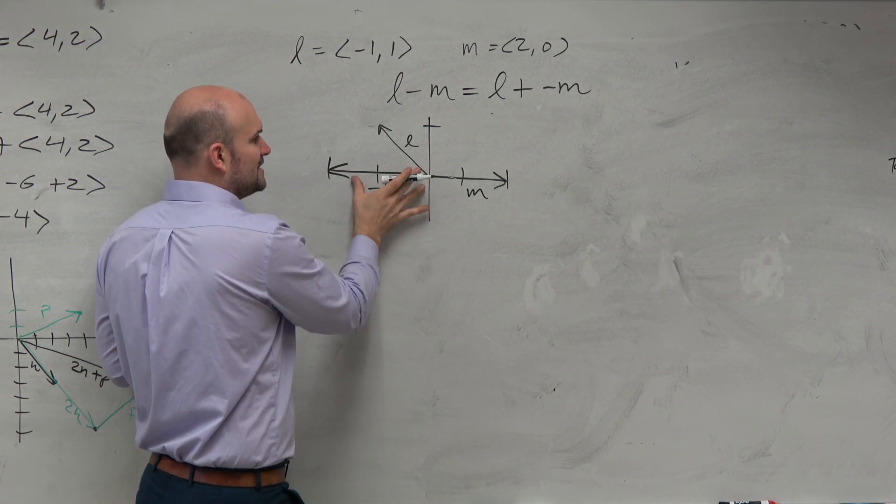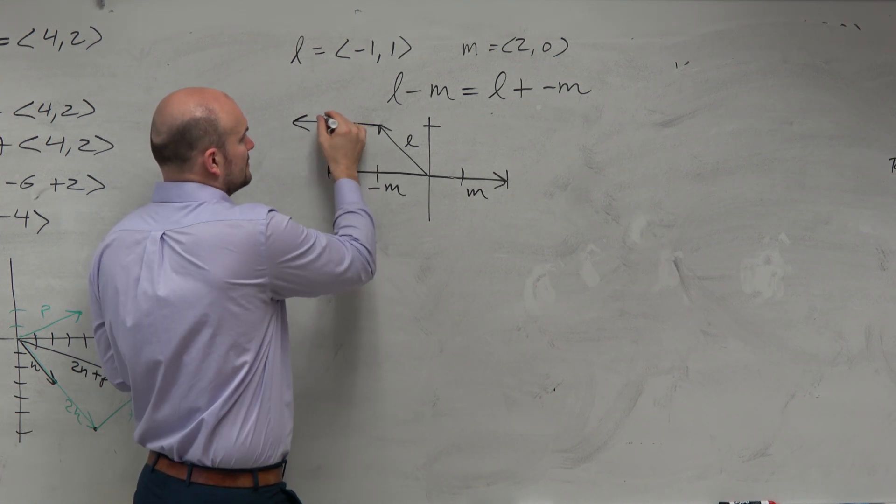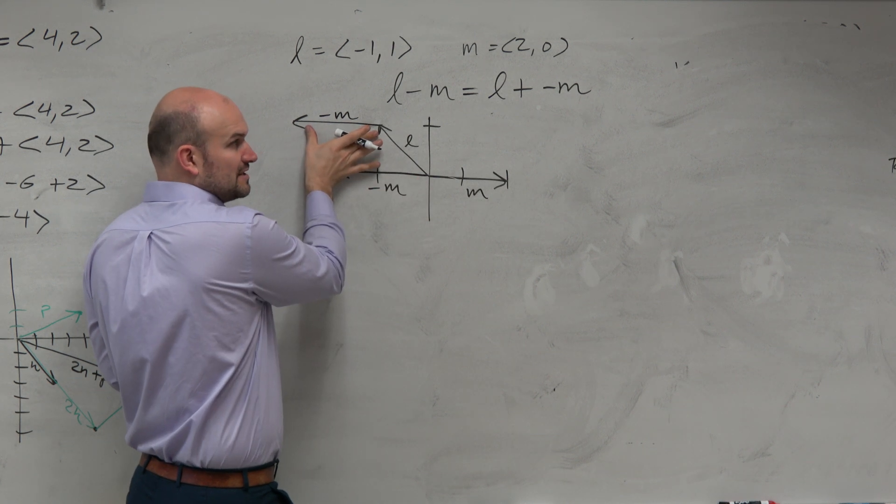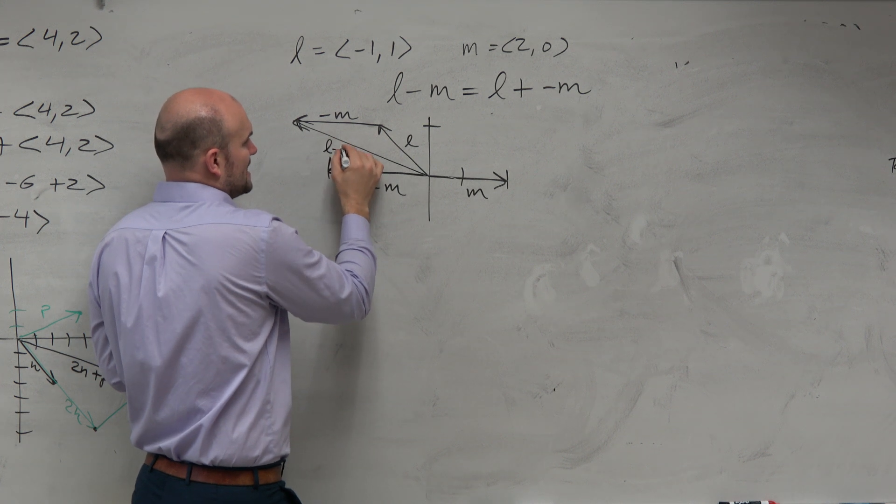So now, if I do my tail to head method, I'm going to get something that's going to look like that, right? Because you take this vector and put it at the end of that vector.